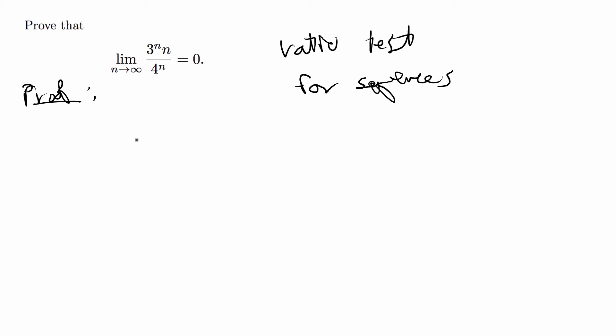For me, the usual rule of thumb is that if I see a to the n, so some number raised to n, then I will at least think of the ratio test, although there might be an easier way to do it or the ratio test might not always work in those cases. But as a rule of thumb, if you see a to the n times something else, usually you can do the ratio test for that type of problem.